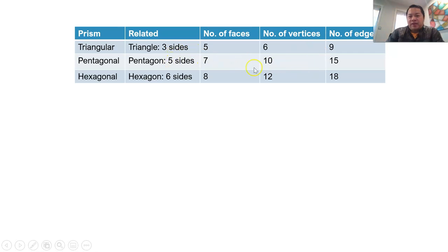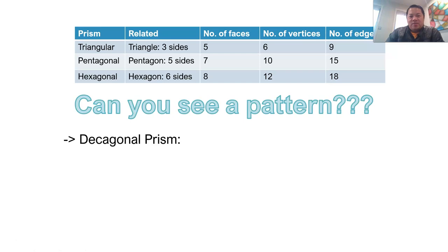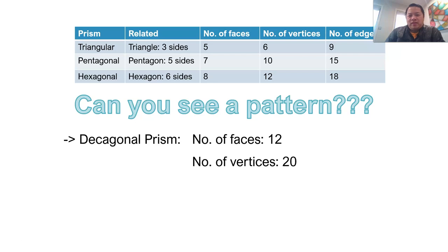So now, what about a decagonal prism? A decagon is related to ten sides. So there are twelve faces — ten plus two. Number of vertices: ten times two is twenty. And the number of edges: three times the number of sides, which is thirty. That's how you get the properties of a decagonal prism.